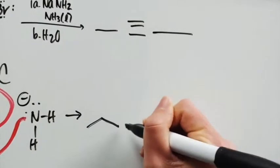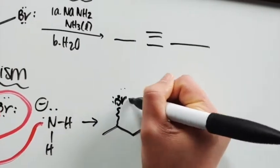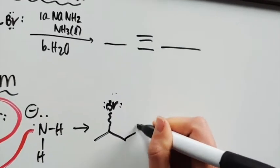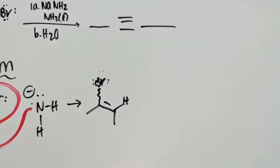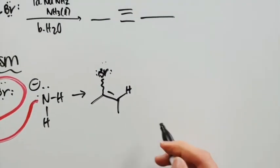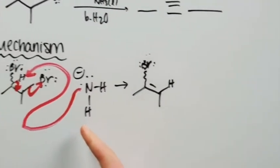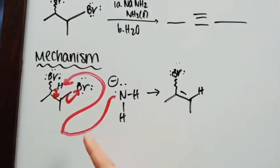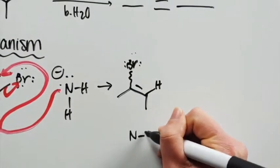Alright, the next step is going to be where we have our double bond right here. So now what's going to happen is that NH2 minus is going to come back again but we need to remember to draw out our NH2 as NH3 because it came and it got protonated. So remember to draw out all of the bonds.